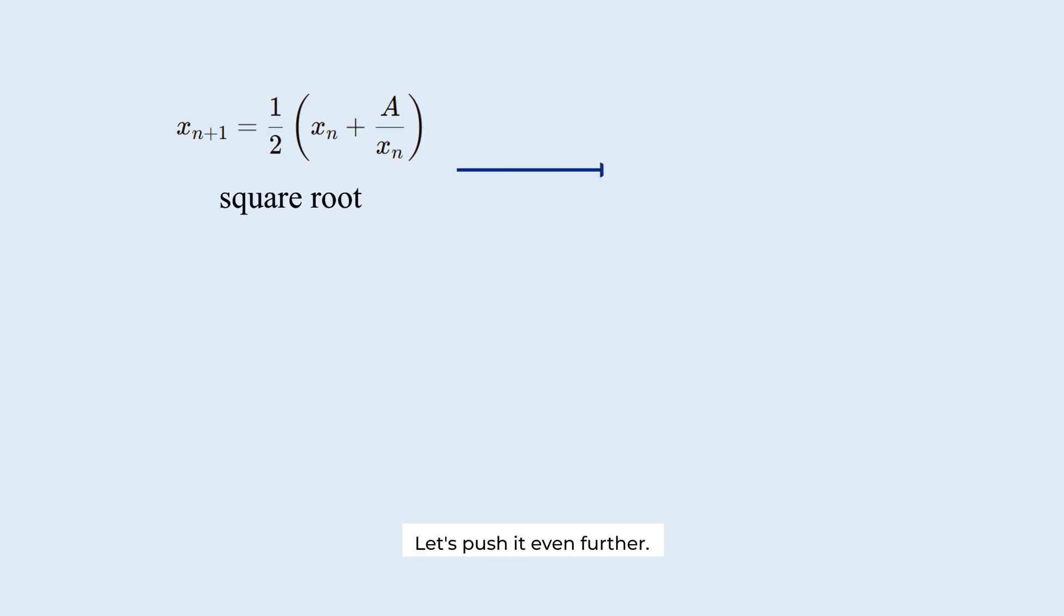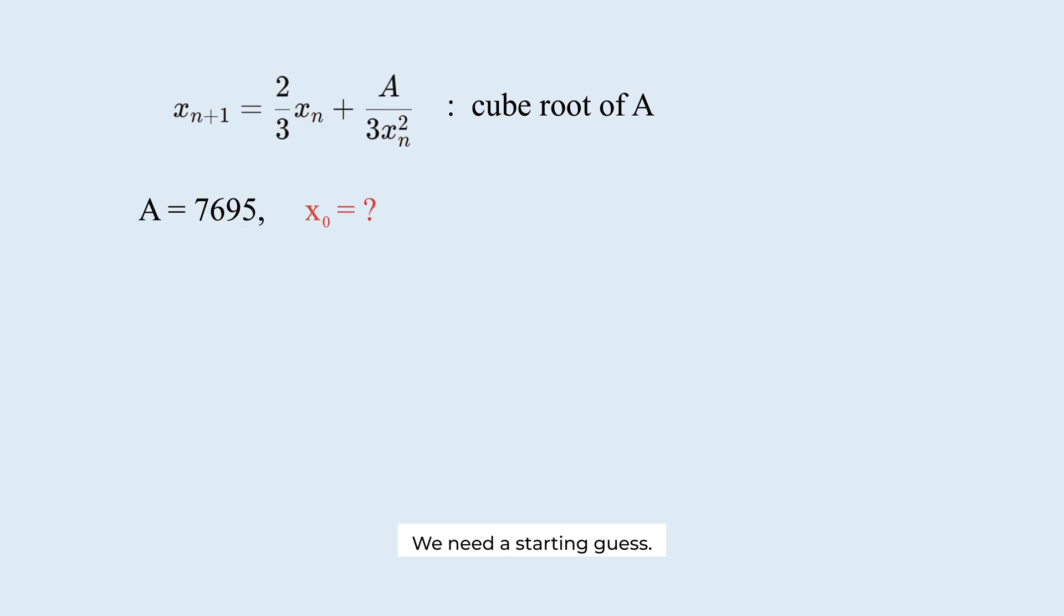Let's push it even further. How about finding the cube root of 7695? Here's the formula for that. We need a starting guess. This number is greater than 1,000, which is 10 cubed, and less than 8,000, which is 20 cubed. The closest natural number is probably 18 or 19. Let's try using 18 as our initial guess.